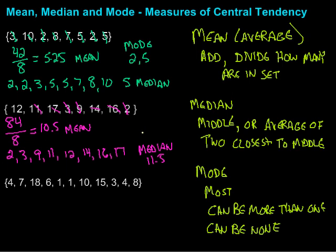Finally, the mode. I look for repeating values. Well this set doesn't have any repeating values. So in this case there would be no mode. There's none because there are no values that repeat.